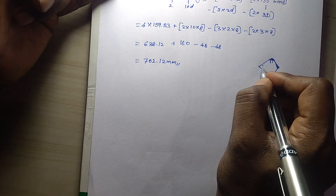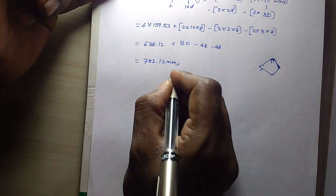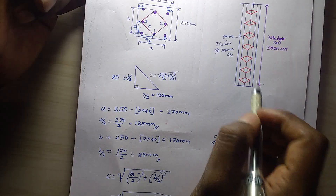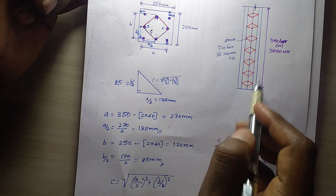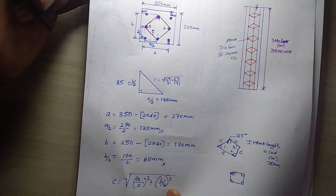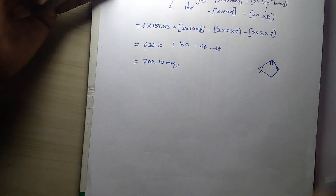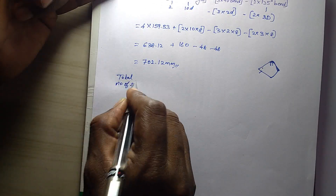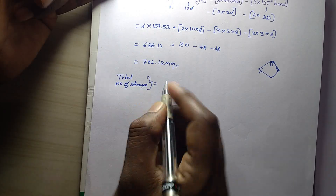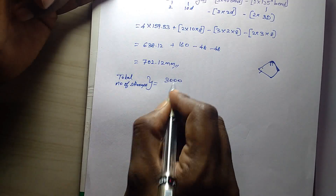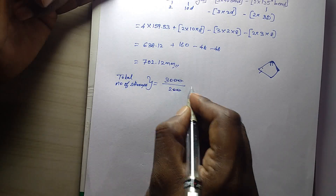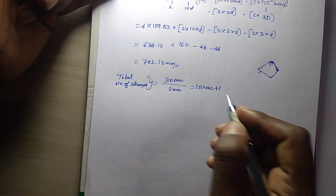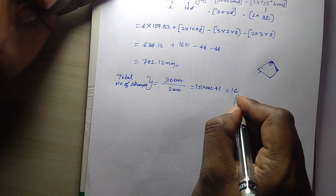1 bar of 1 stirrups length is now total of 3 meters, total spacing 200mm. So 3 divided by 200mm — total number of stirrups. Total number of stirrups for total 3 meters with 200mm spacing — we get 15 numbers of stirrups. Additional number — so total of 16 numbers. Total 16 numbers of stirrups.